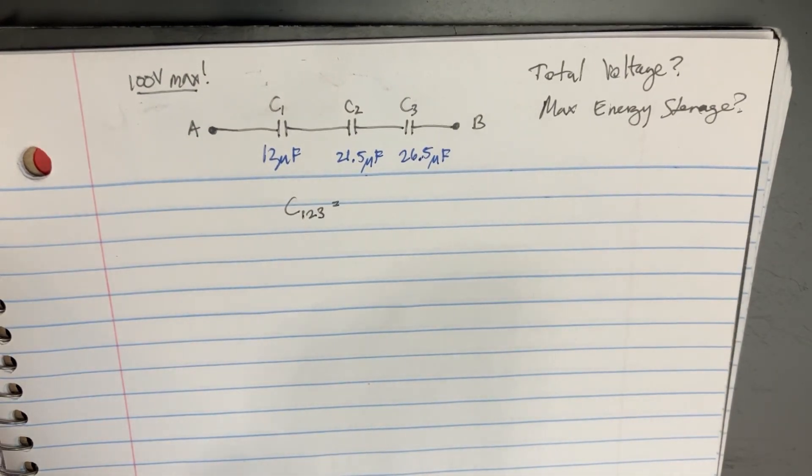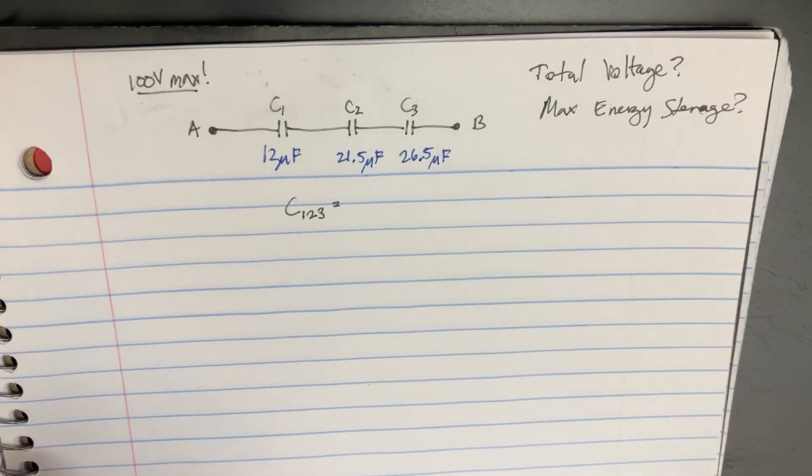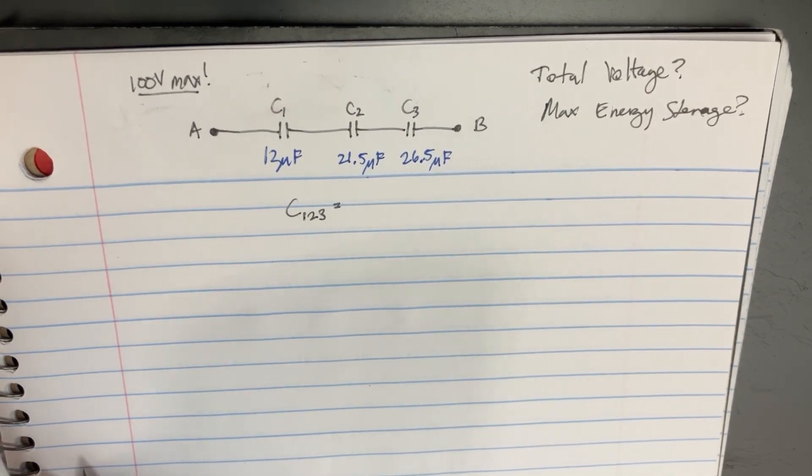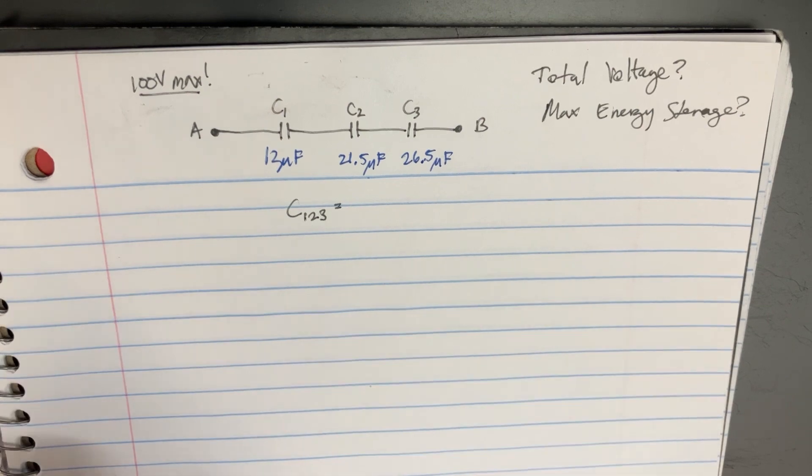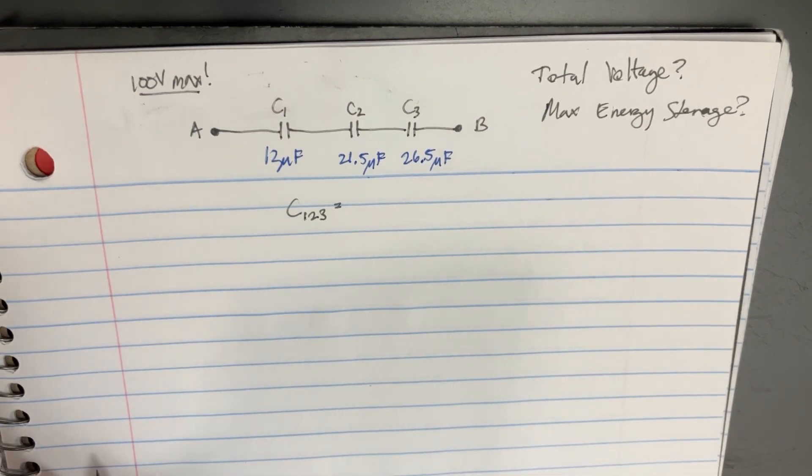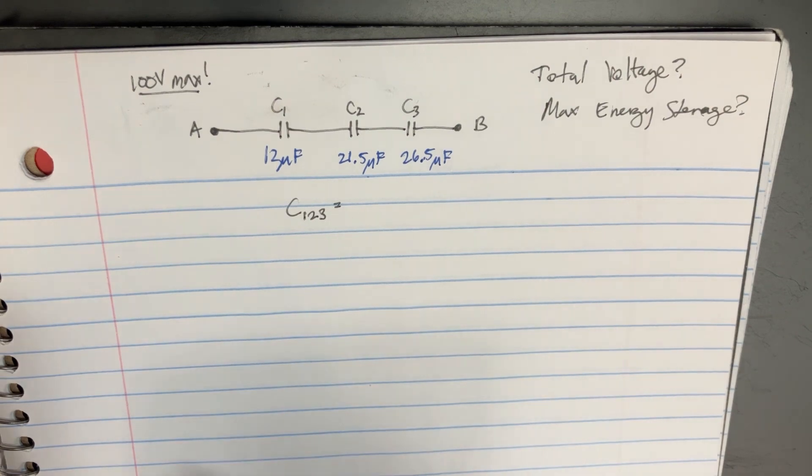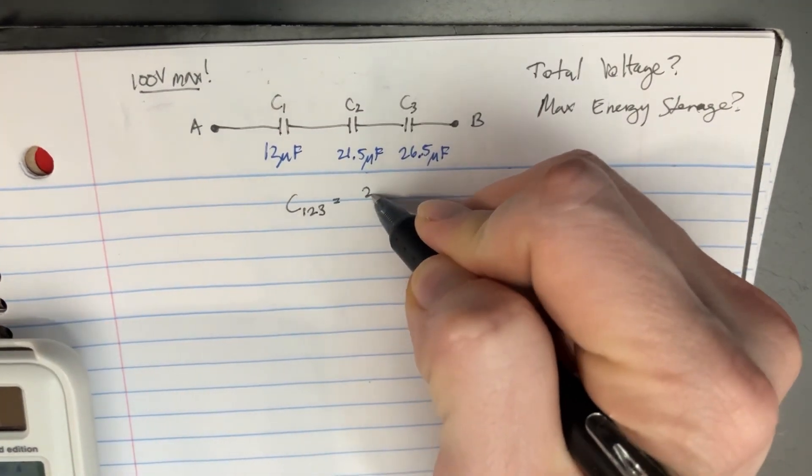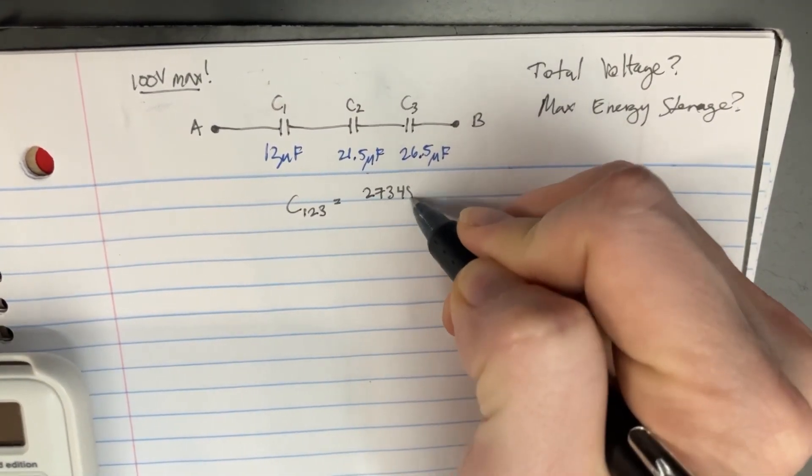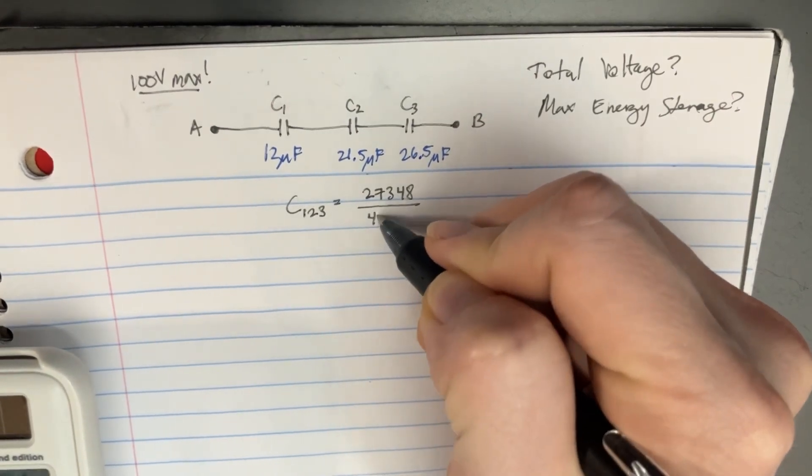We're going to get 1 over 12 plus 1 over 21.5 plus 1 over 26.5. And that will give us this crazy number, which is like 27348 over 4583.